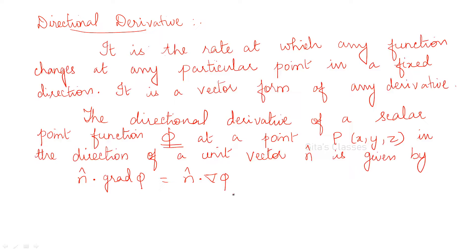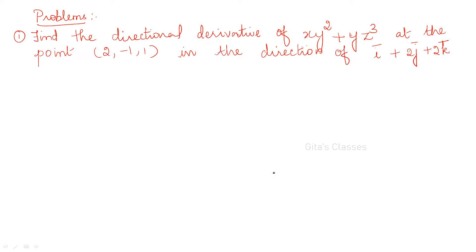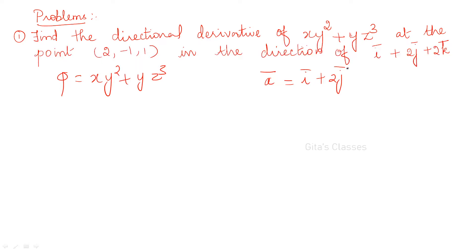Del phi is i into ∂phi/∂x plus j into ∂phi/∂y plus k into ∂phi/∂z. Now let us see the problem. Find the directional derivative of phi equal to xy² plus yz³ at the point (2, 1, -1) in the direction of a_bar equal to i plus 2j plus 2k.